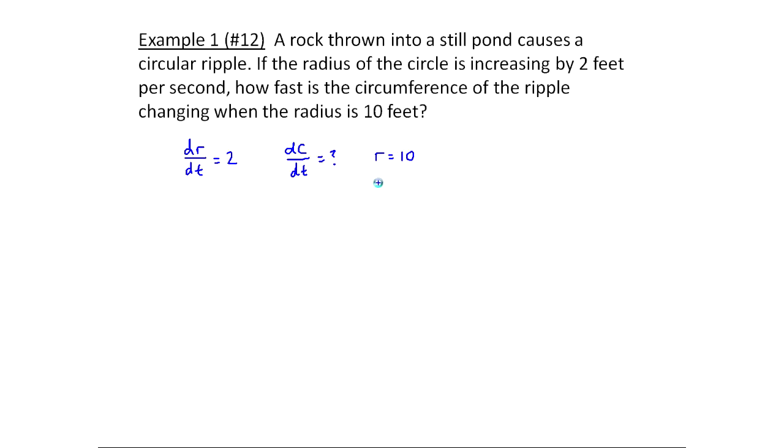Now the variables floating around are c and r, and I need a way to relate these together. Circumference, the formula for any circle, is c equals 2πr, where r is the radius and c is the circumference. Once you have this equation that relates them, you're going to take this information here and plug it in after you take the derivative with respect to time.